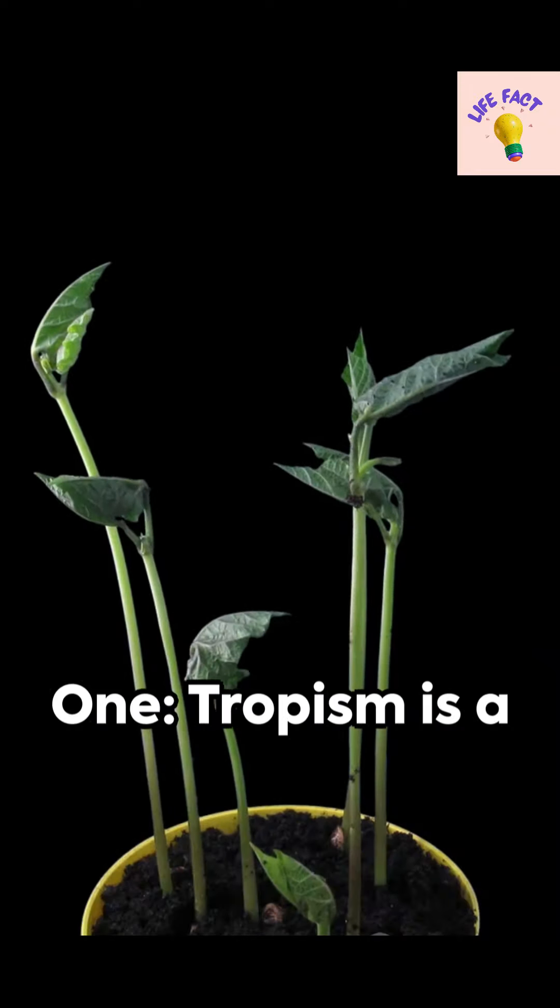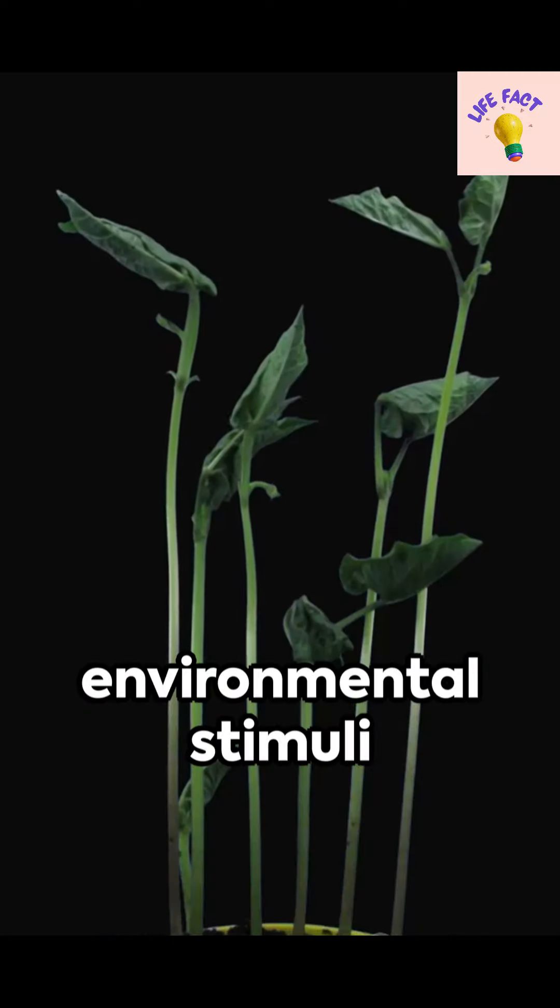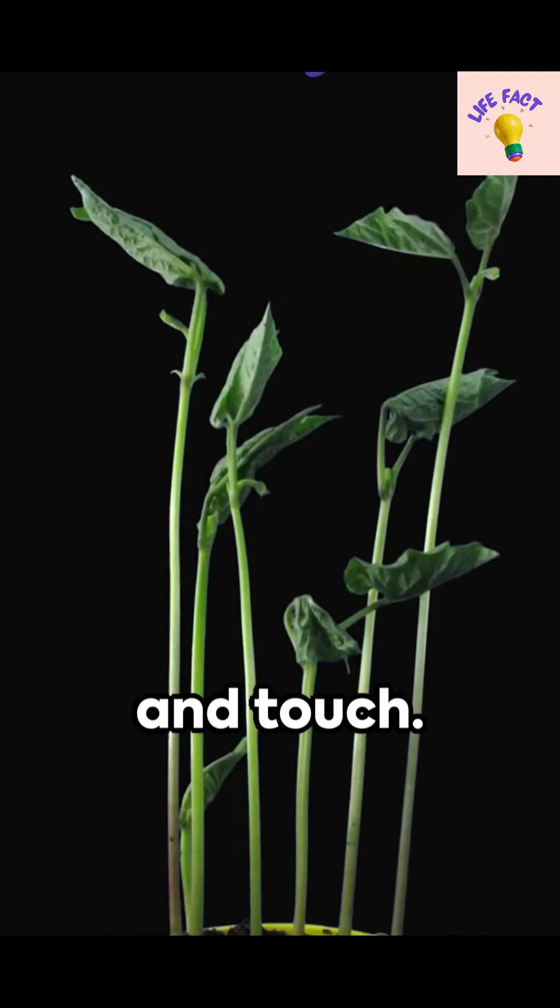One: Tropism is a plant's movement or growth in response to environmental stimuli like light, gravity, and touch.